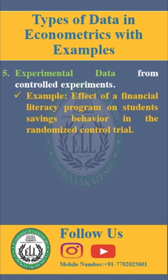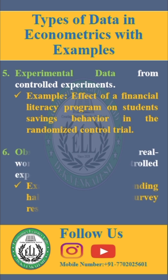The fifth type is experimental data, obtained through controlled experiments to establish a causal relationship. Example: the effect of a financial literacy program on student saving behavior in a randomized controlled trial.